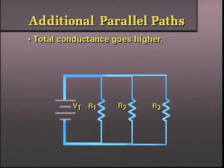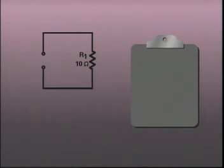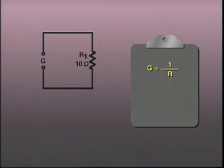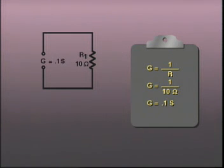Now let's see how this works with specific resistors. Here we have a single 10 ohm resistor. We could consider that the resistor is a conductive path, indicated by the letter G for conductance. For this resistor, the conductance would equal the reciprocal of the resistance: 1 divided by 10 ohms. This equals 0.1 siemens for the 10 ohm resistor.